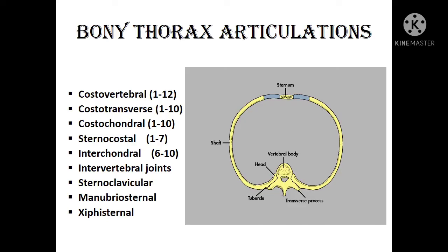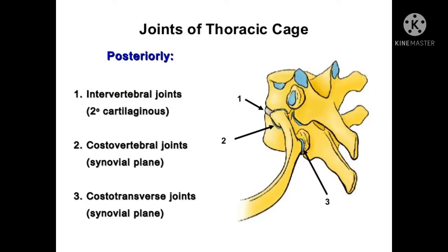The joints present in the thorax are costovertebral, costotransverse, costochondral, sternocostal, interchondral, intervertebral joints, sternoclavicular, manubriosternal and xiphisternal joints.